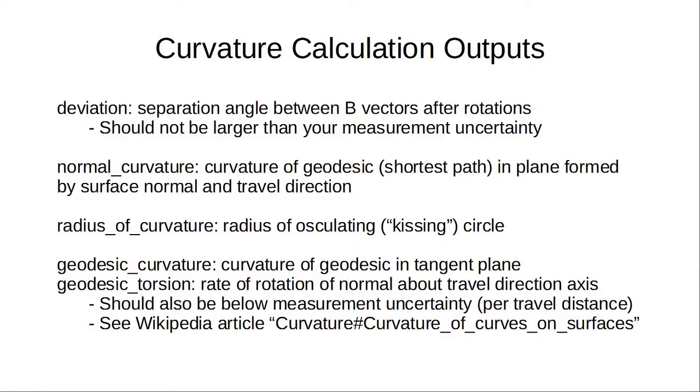This slide shows the complete calculations. I'll go through it briefly. First, we set up our coordinate system. This is the standard rotation matrix in three dimensions. We convert azimuth and elevation to unit vectors. This part computes and applies the first rotation. This part computes and applies the second rotation. And this part decomposes the combined rotation into three different kinds of curvature. The output of the procedure is these five numbers. The deviation is the separation between the start and end B vectors after the rotations are complete. This should be smaller than your measurement uncertainty. Otherwise, it means that the separation angles between the stars is not the same.